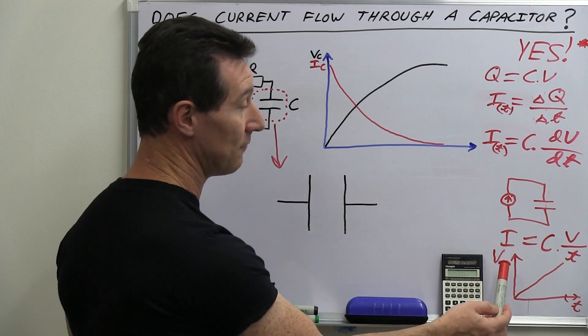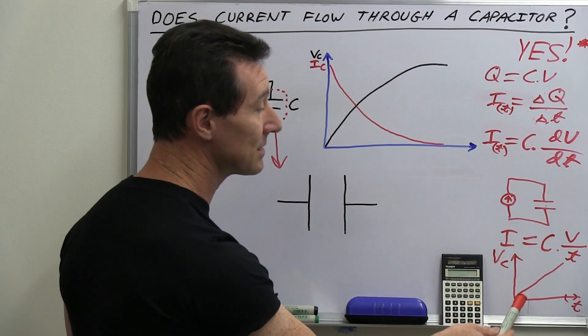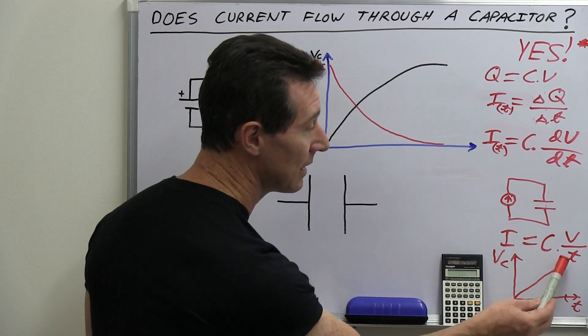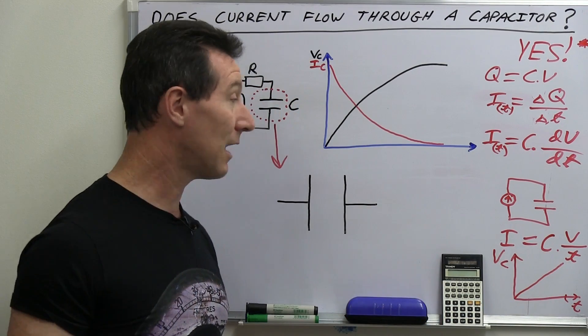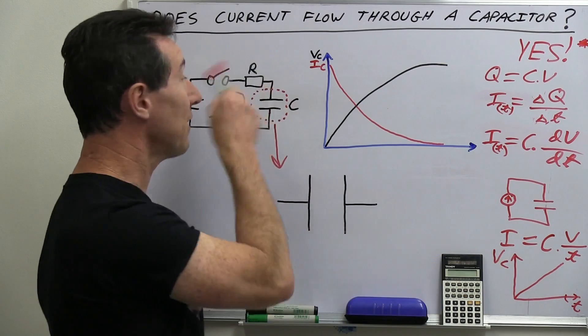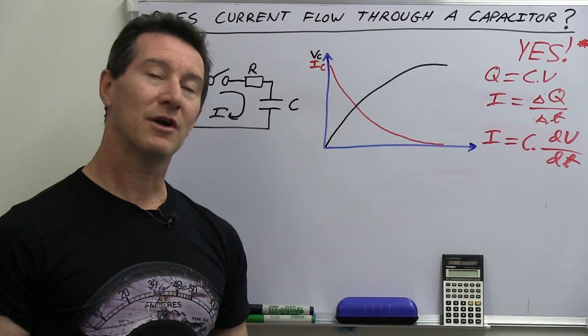And the vc, the voltage across the capacitor, will charge up, will rise in a linear fashion like that, just as we saw in the previous video. So there's current flowing in here. So it's time to ask ourselves, what is current?